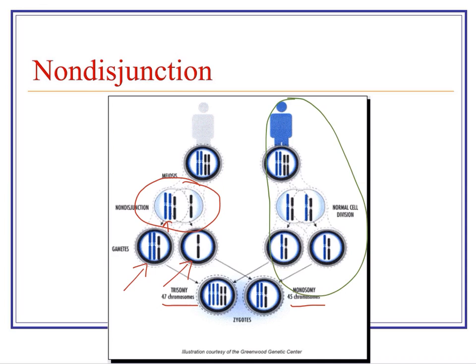There are certain situations — certain genetic disorders — that result from nondisjunction, so having an extra chromosome or a missing chromosome. We most often see these with chromosomes 13, 18, 21, and the sex chromosomes as well.